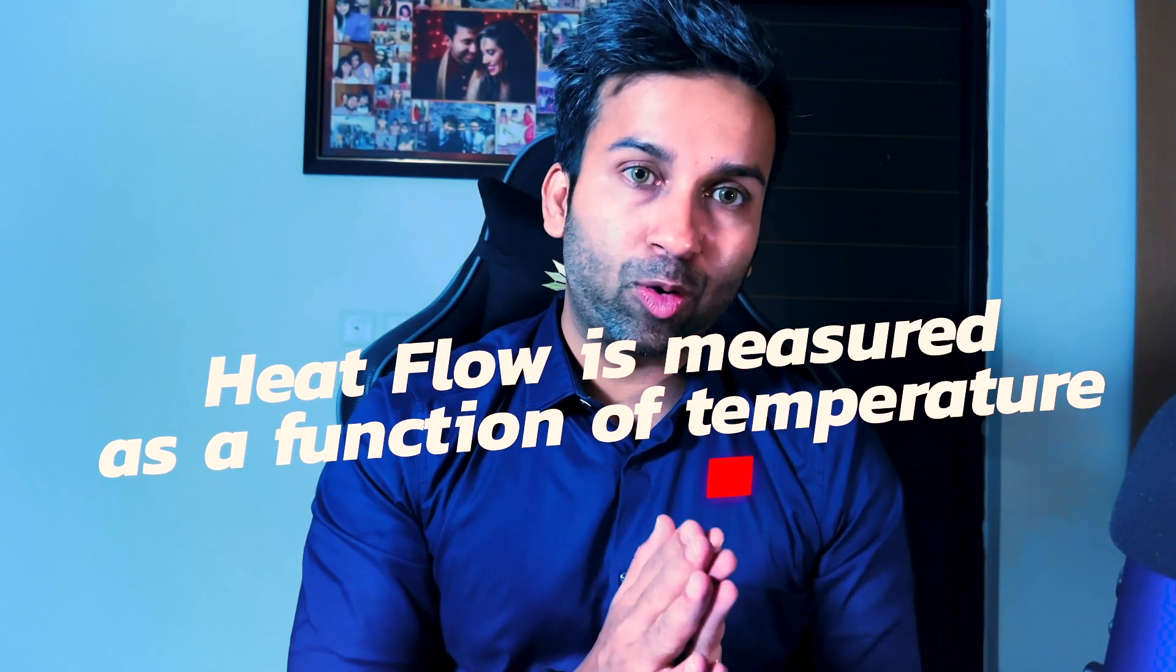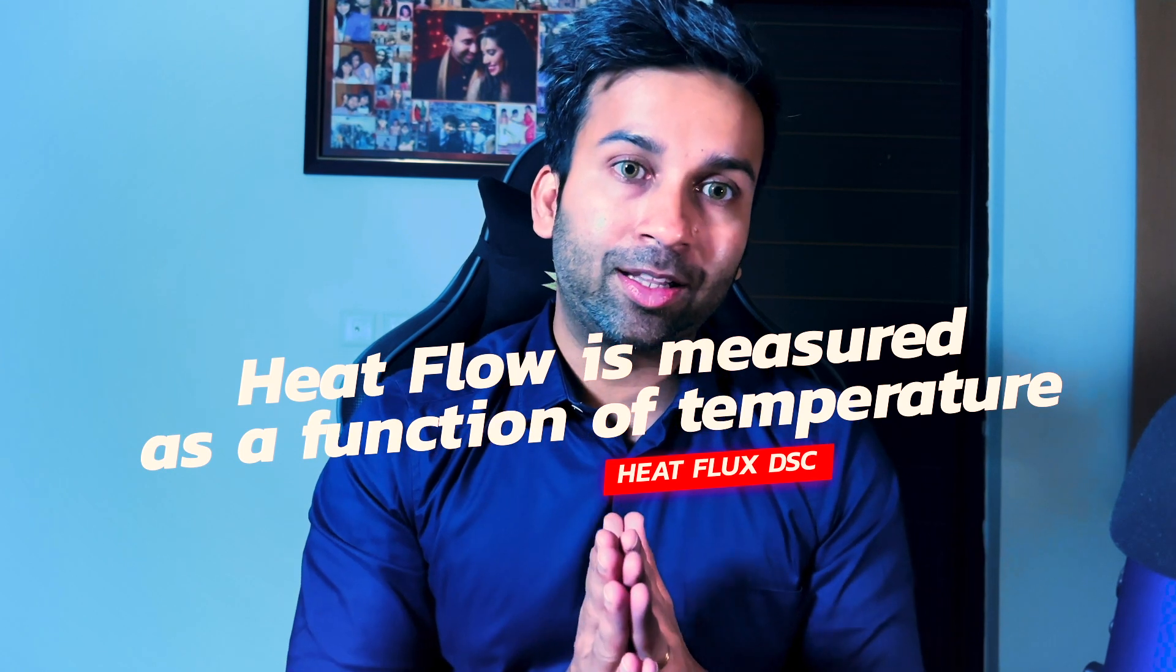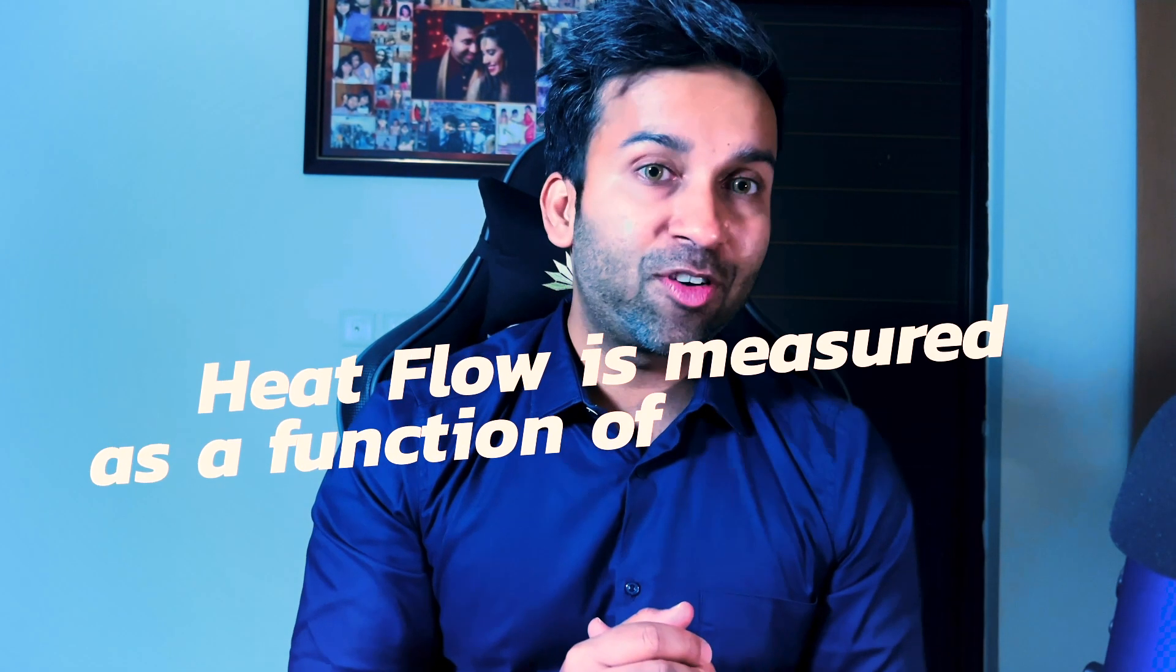There are two main types of DSC. Heat flux DSC is a type where the heat flow into or out of the material is directly measured as a function of temperature. This is in contrast to power compensated DSC where the temperature difference between the sample and reference is kept constant by adjusting the power supplied to the sample.